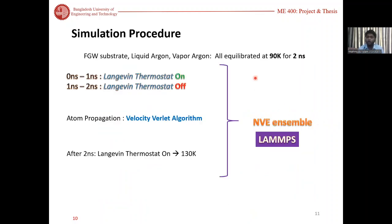Now I will continue the simulation procedure. First, all atoms were equilibrated at 90 Kelvin temperature for two nanoseconds. For zero to one nanosecond we kept the Langevin thermostat on, and for one to two nanoseconds we kept it off. We calculate our atom propagation using velocity Verlet algorithm. After two nanoseconds, Langevin thermostat was turned on to raise the temperature to 130 Kelvin. All was done using NVE ensemble and LAMMPS.